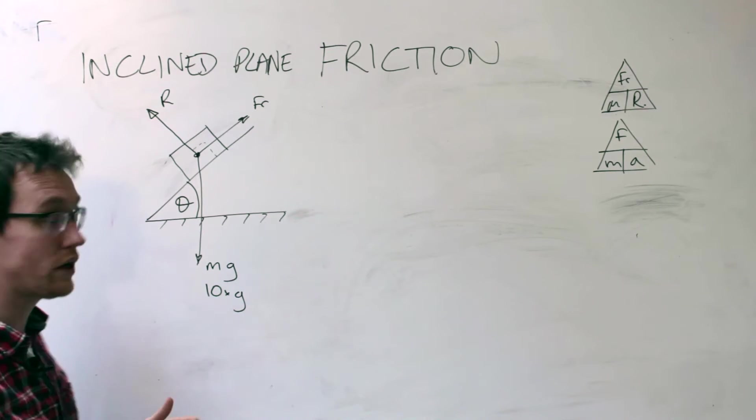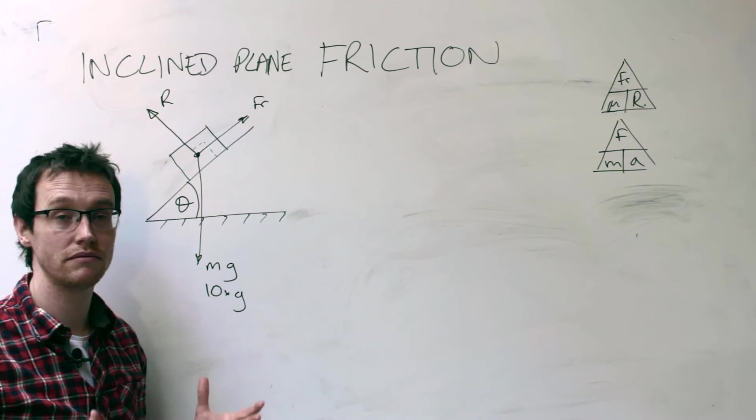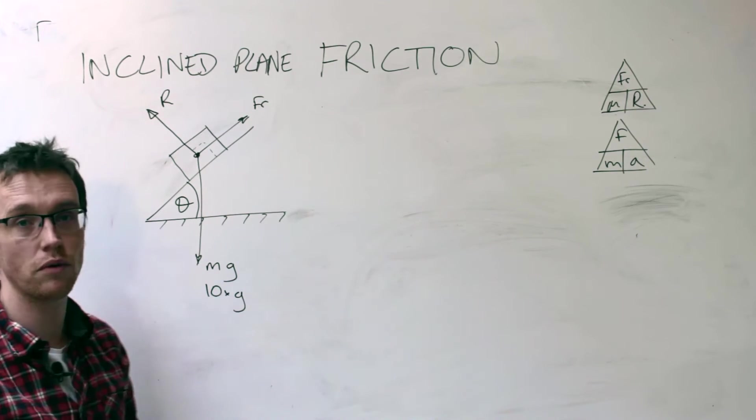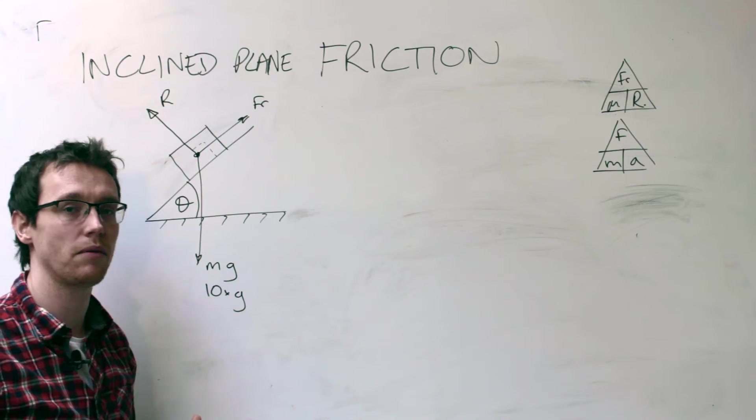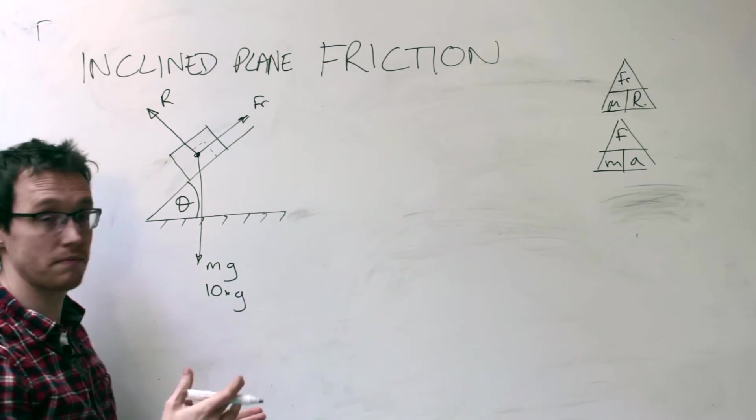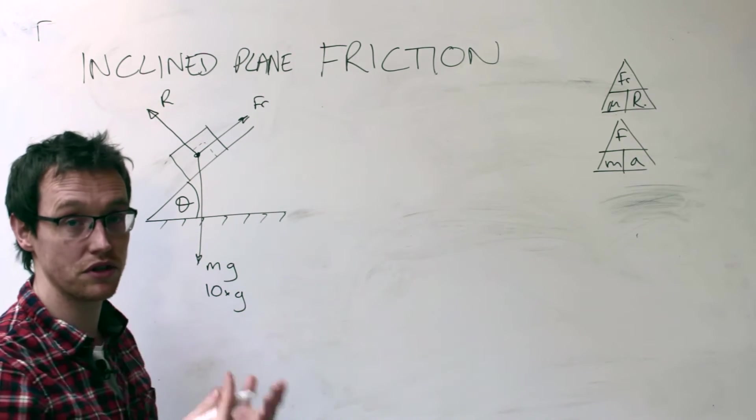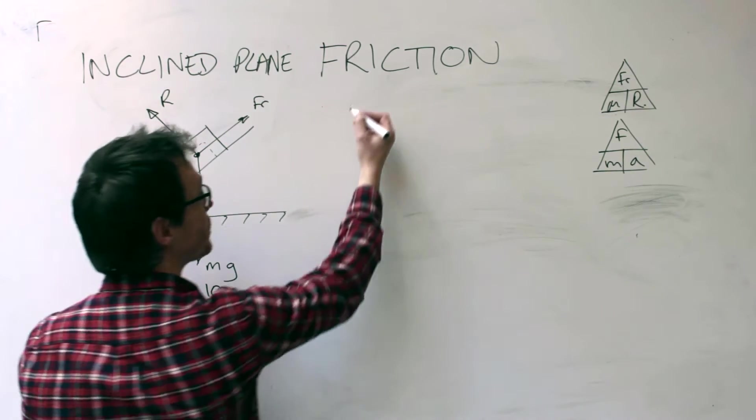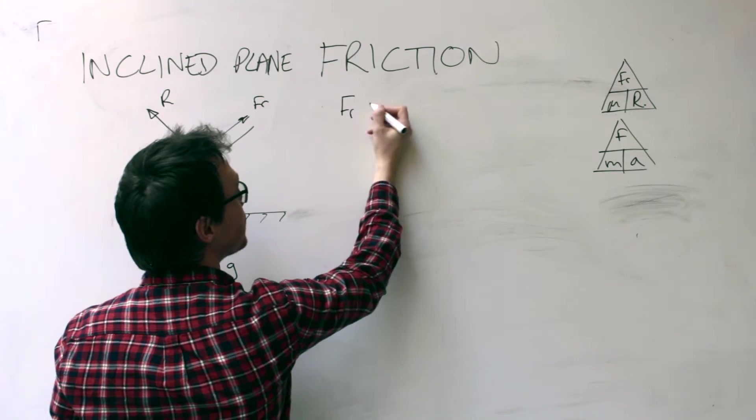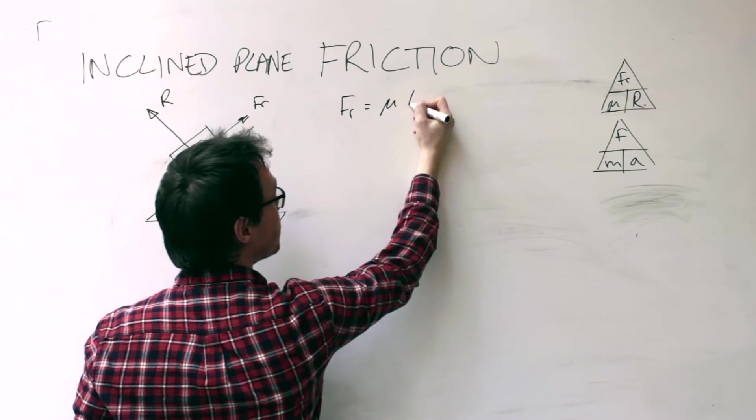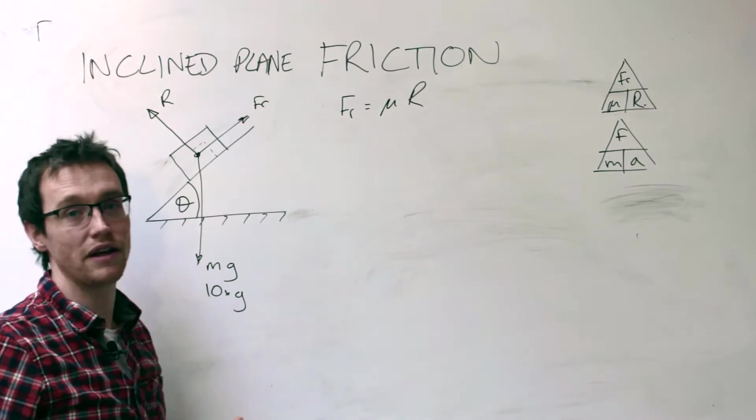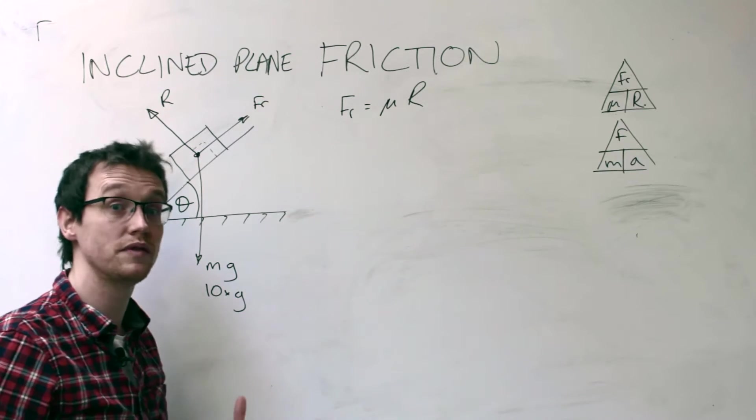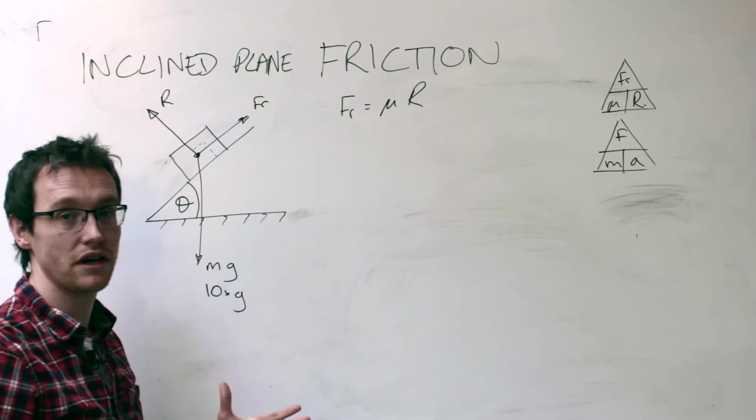So we can use some of the same formulae that we've used before, but there's a couple of extra steps in these kind of problems. Let's state what we know first of all. We're going to start by stating our formula: friction equals mu R. We're going to use the same values as last time and observe the differences that this particular method takes us to.